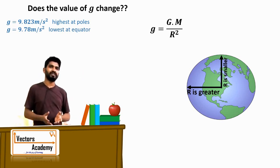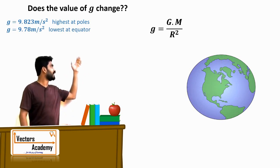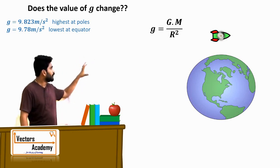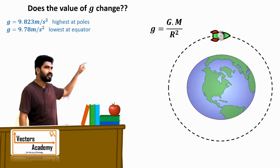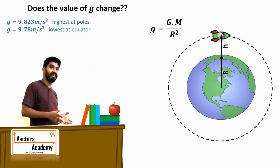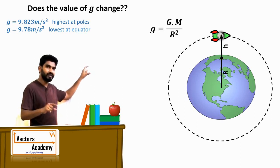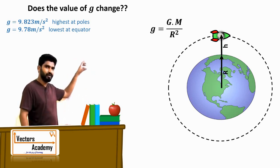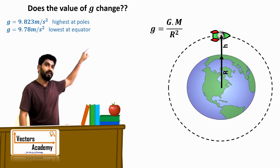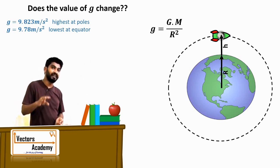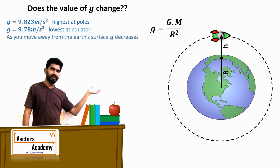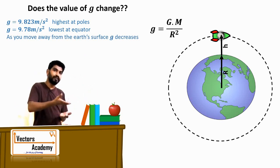This is not the only parameter which decides the value of g. Consider yourself traveling in an aircraft or in space. The distance from the center of the earth has now increased — the radius becomes the radius of the earth plus the height of the spacecraft. If the value of r increases, and r is in the denominator, the value of g decreases. So as you move away from the surface of the earth, the value of g decreases.